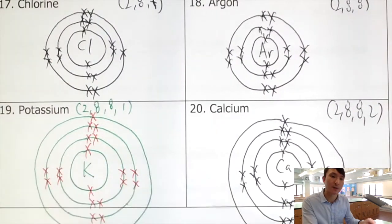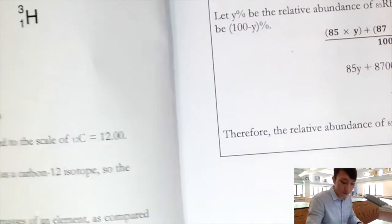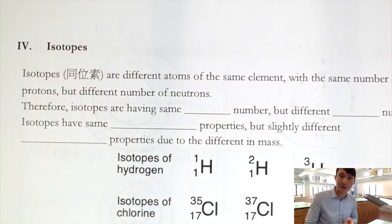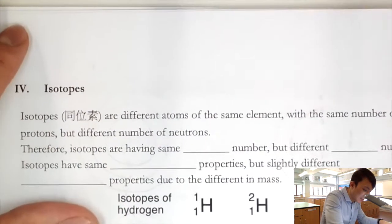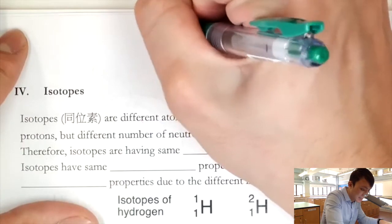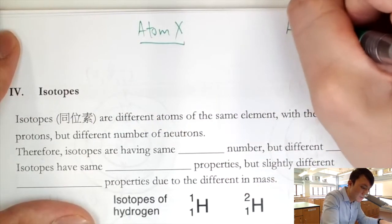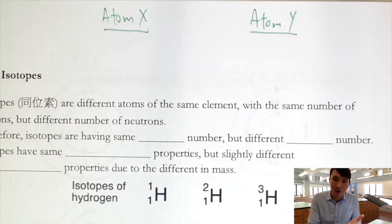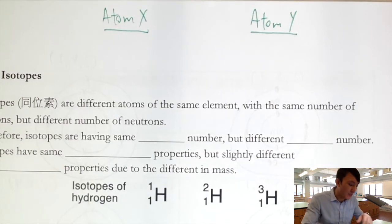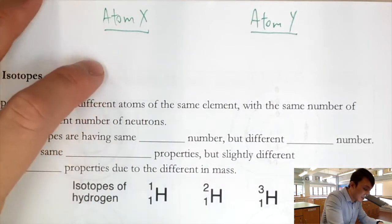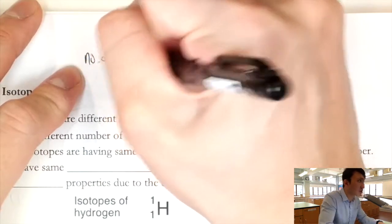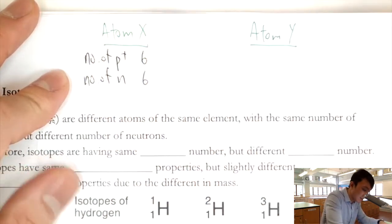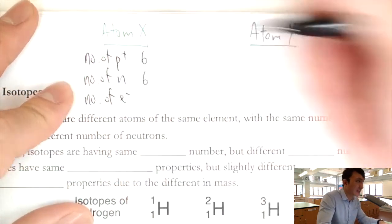Before we end today's video, there is one more item to discuss. Let's say we have two atoms, atom X and atom Y, and I give you the subatomic particle composition. For atom X: it has six protons, six neutrons, and six electrons. The number of protons equals the atomic number, so atom X has atomic number six — which is carbon.